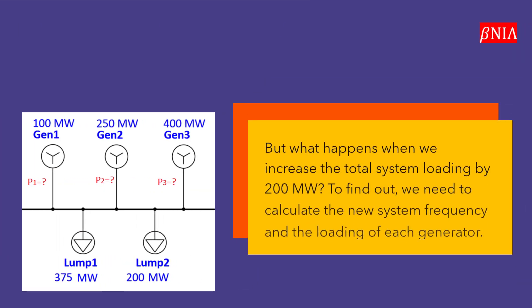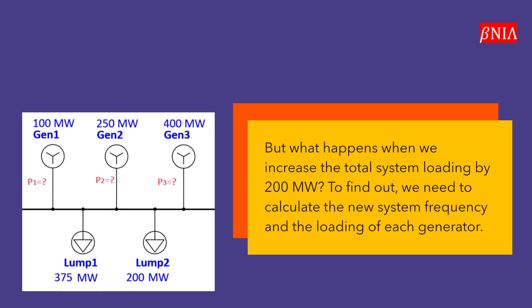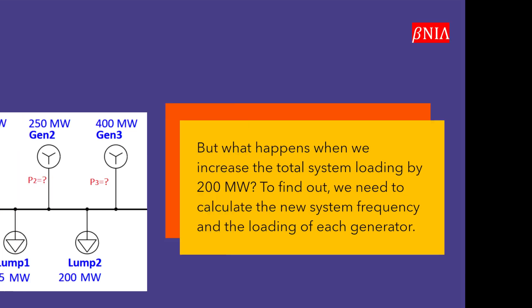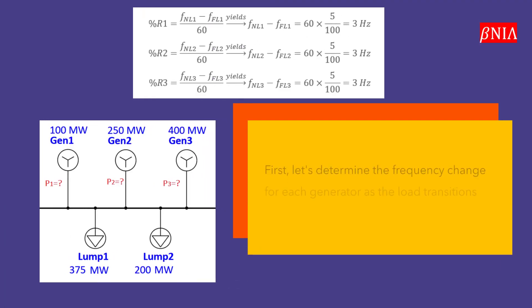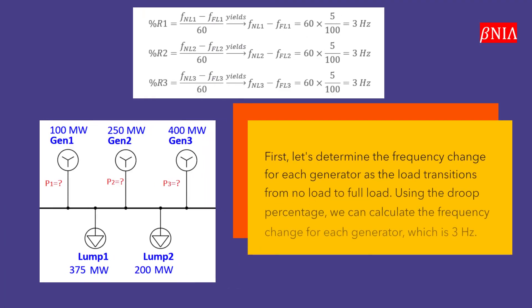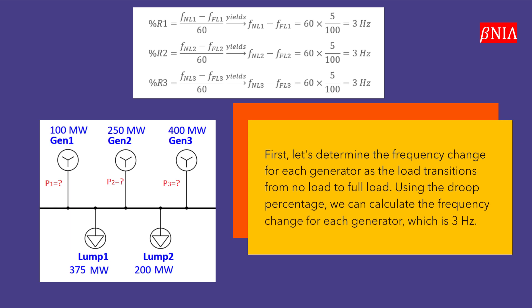But what happens when we increase the total system loading by 200 megawatts? To find out, we need to calculate the new system frequency and the loading of each generator. First, let's determine the frequency change for each generator as the load transitions from no load to full load.